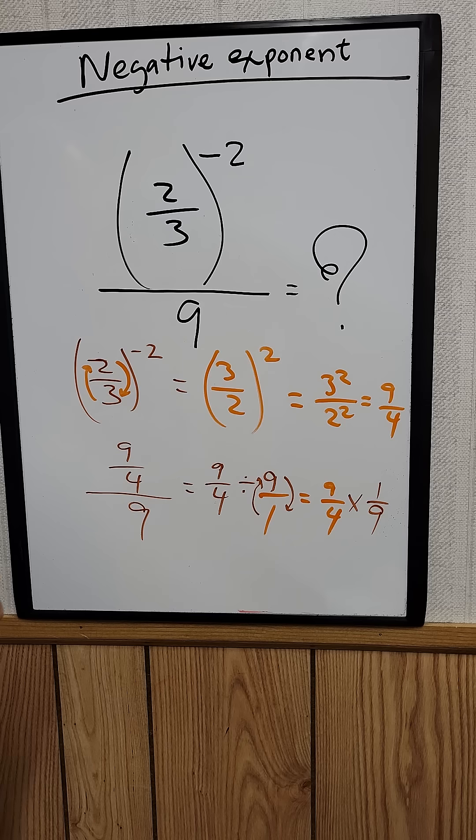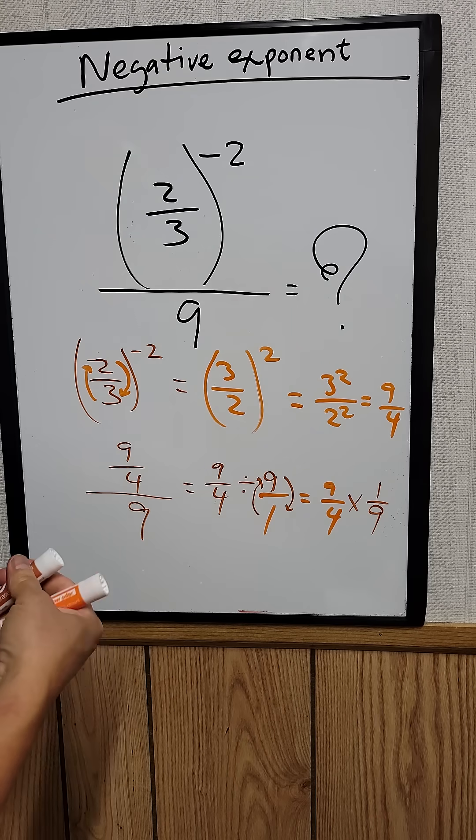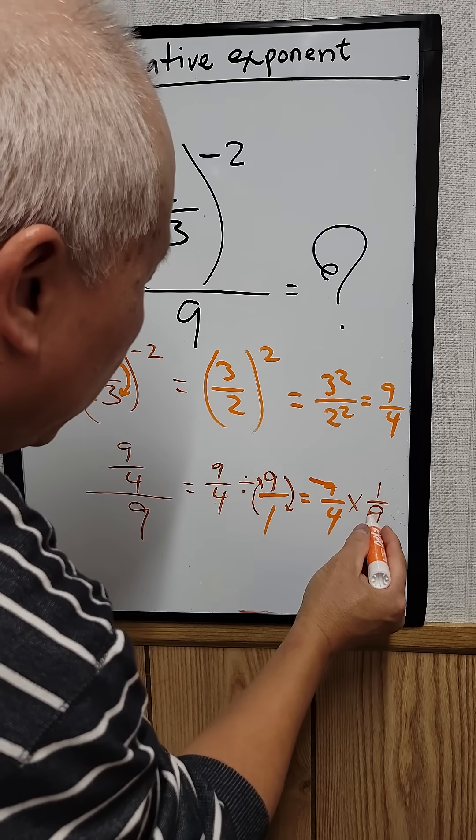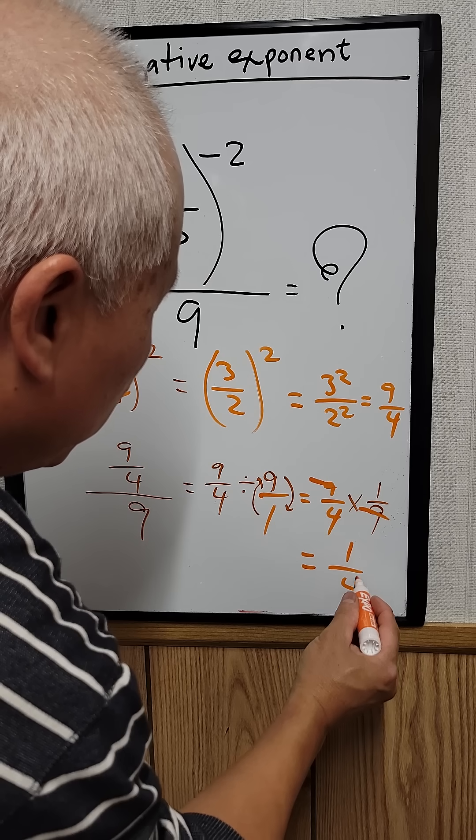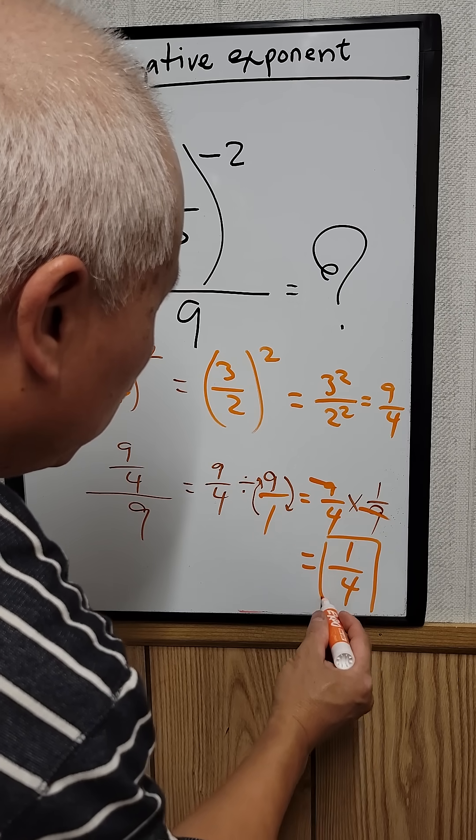And 9 cancel out. So the 9 cancel out, all you have left is 1 over 4. That's your answer. So thank you so much for watching.